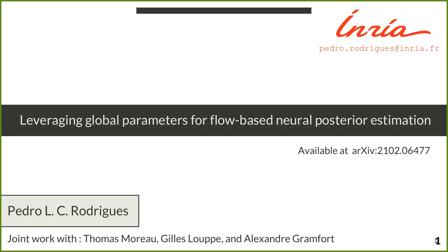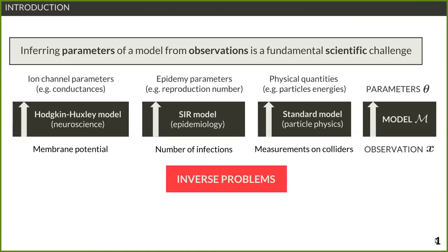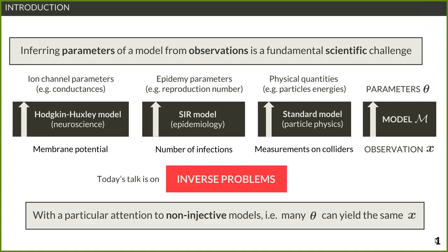This general idea of trying to reverse a model — where you have an observation and you want to know what parameters generated that observation — is a very general problem in science. People here in this ABC workshop are familiar with this kind of inverse problem. The specific topic of this work is a certain class of models we call non-identifiable models, where by construction you may have several different theta values that yield the same observation x.